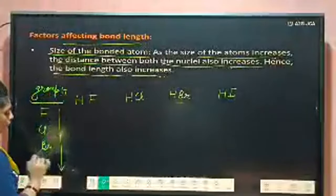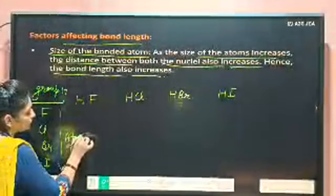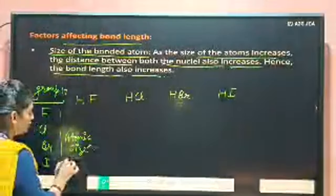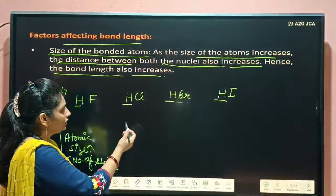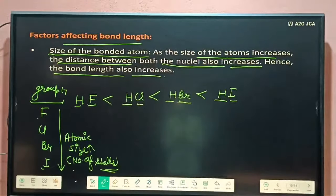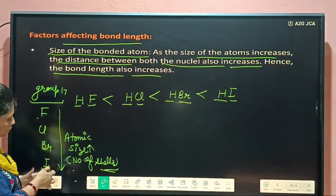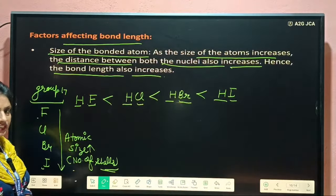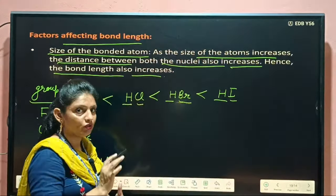If atomic size increases, then bond length also increases. Bond length is directly proportional to the atomic size. Here, hydrogen bonded to fluorine has a shorter bond. Hydrogen bonded to chlorine — chlorine size is greater than fluorine, so bond length is greater. Hydrogen bonded to bromine — bromine size is even greater, so bond length further increases. Bond length is directly proportional to atomic size.